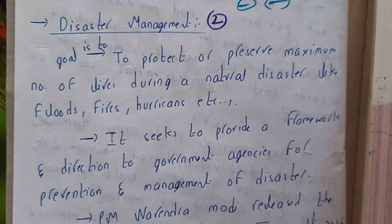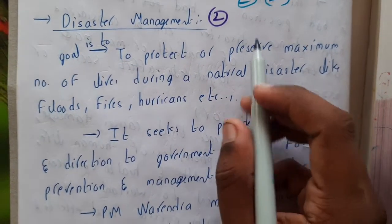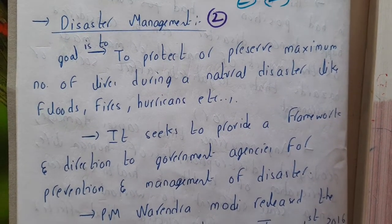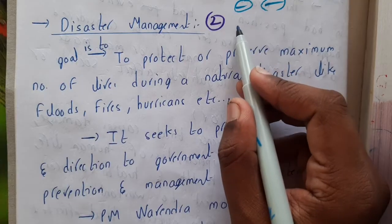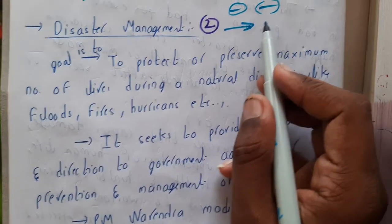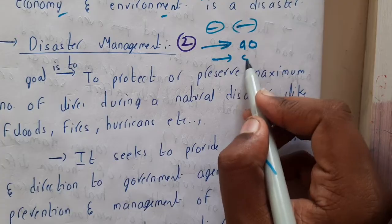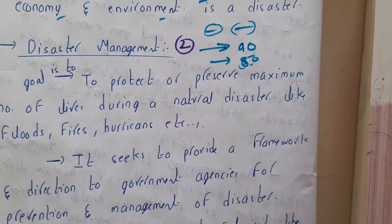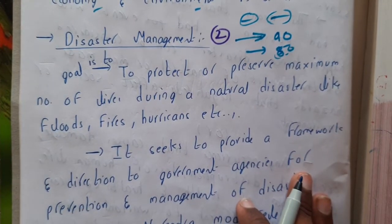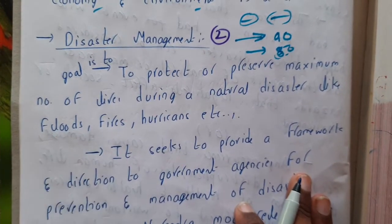Disaster management is nothing but you or a group of people who are members of the disaster management team. They will be working so that if any disaster occurs, without the disaster team the percentage of damage might be 90 percent, but when the disaster management team is there it should be reduced to 50 percent. They are going to control the disaster, minimize the number of deaths, and reduce the disaster effect.